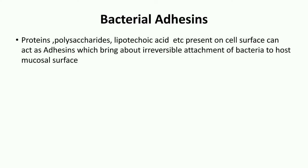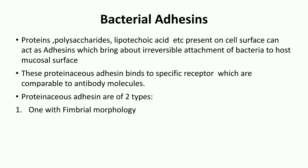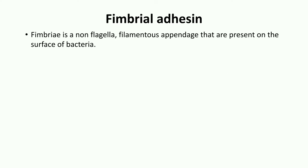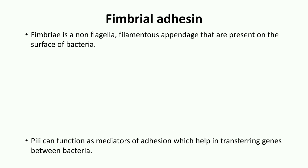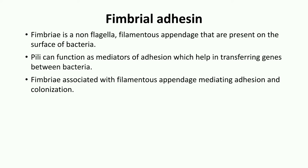Bacterial adhesins include proteins, polysaccharides, lipoteichoic acid, etc., which are present on the surface of cells and act as adhesins to bring about irreversible attachment of bacteria to the host mucosal surface. These proteinaceous adhesins bind to specific receptors comparably to an antibody molecule. Proteinaceous adhesins are of two types: fimbrial adhesins and non-fimbrial adhesins. Fimbriae are non-flagellar filamentous appendages present on the surface of bacteria. Fimbrial structures are very similar to pili, which can also function as mediators of adhesion and help in transferring genes between bacteria. Fimbriae mediate adhesion and colonization and may be either peritrichous or polar in nature.